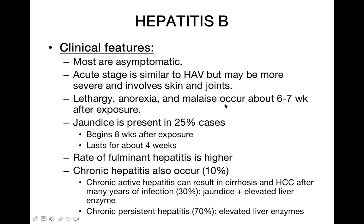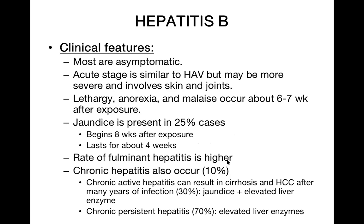Jaundice is present in only 25% of cases — not a major symptom in hepatitis B, compared to 70% in hepatitis A. Jaundice may begin eight weeks after exposure and last about one month. The rate of fulminant hepatitis is much higher than in hepatitis A. A very important point is chronic hepatitis development.